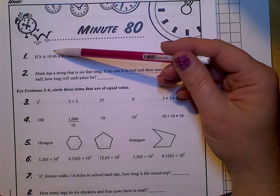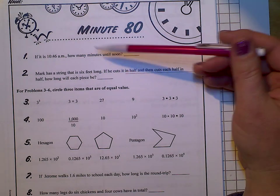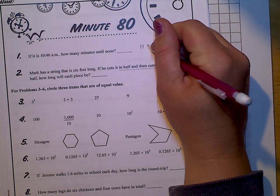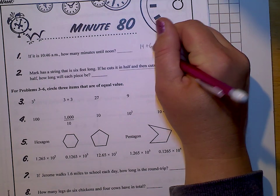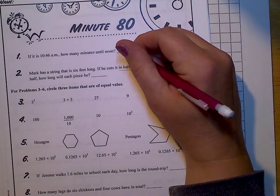If it is 10:46 in the morning, how many minutes until noon? So you need 14 more minutes until 11, plus the 60 minutes for an hour. So 60 plus 14 is 74 minutes.